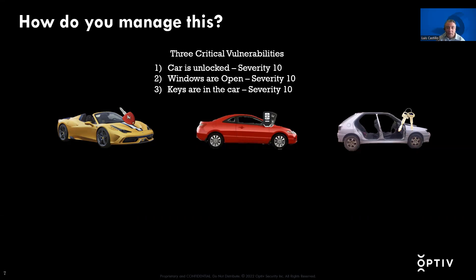We need more information than just vulnerability severity. Let's start with asset criticality — defined as the business value that an organization assigns to an asset. Keeping it simple and using a monetary value, it's pretty obvious we would prioritize the yellow Ferrari first, as it has the biggest value. But this is not the only metric or factor you can use.